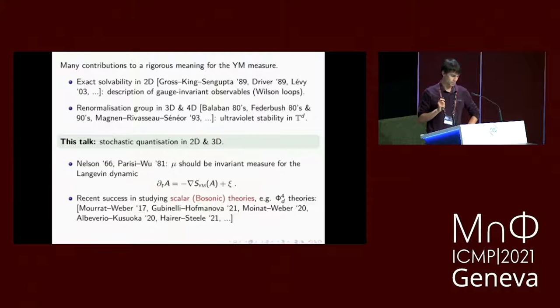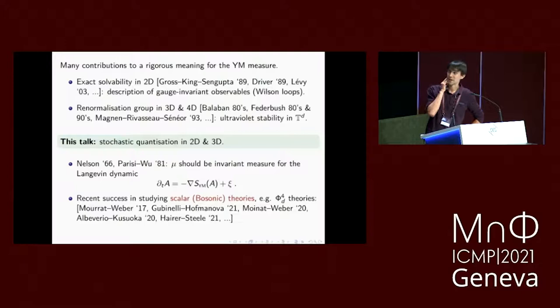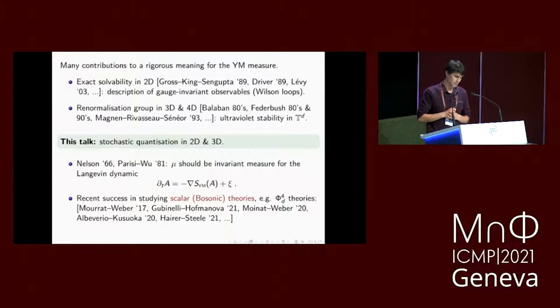This is not specific to gauge theories, although Parisi and Wu introduced it for gauge theories. One can attempt to study any quantum field theory using stochastic quantization. This has been very successful recently in the study of scalar or bosonic theories — for example, the phi-4-d measures. There have been contributions in the last four or five years from Jean-Christophe Mourrat, Andrew Krieger, Massimiliano Gubinelli, and others. By making this equation well-posed, one can derive properties of the measures — for example, show Osterwalder-Schrader axioms, obtain tail bounds, and so on.